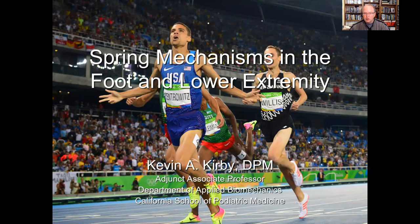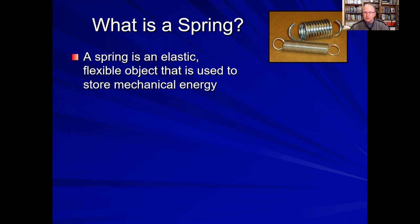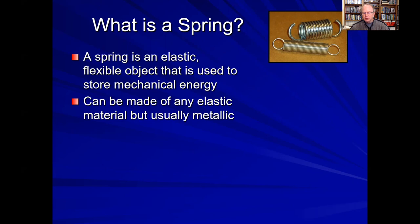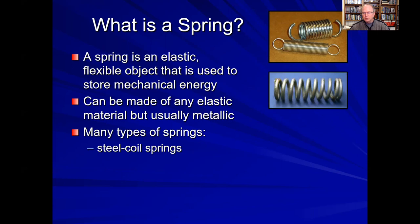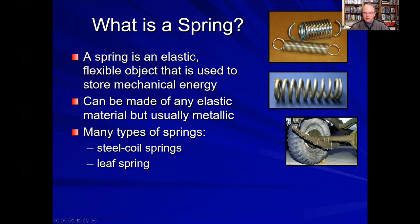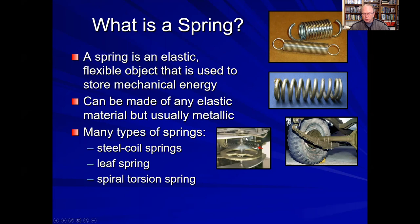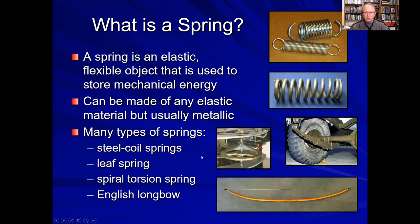First of all, what is a spring? Well, a spring is an elastic structure. It's flexible and it's used to store mechanical energy. It can be made of a variety of materials, but any elastic material will suffice. Typically they're metallic. There are many types of springs: compression springs such as the steel coil spring shown here, leaf springs in the rear axle of a truck, spiral torsion springs used in clock mechanisms, and springs of more unusual varieties such as the English longbow, in which the mechanical energy is stored within the wooden bow used for a bow and arrow.